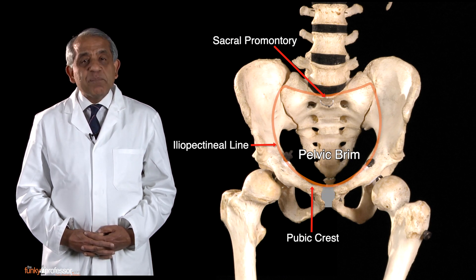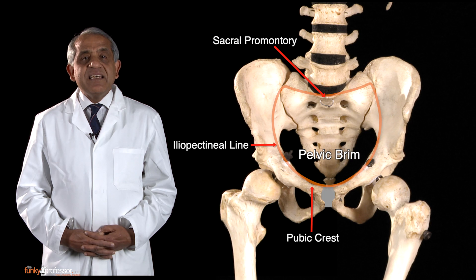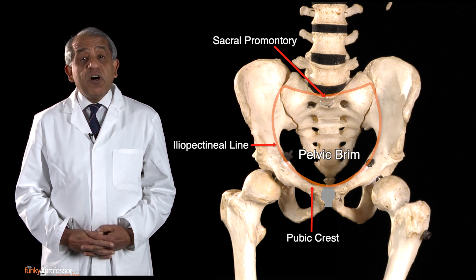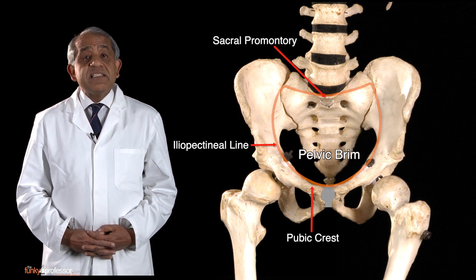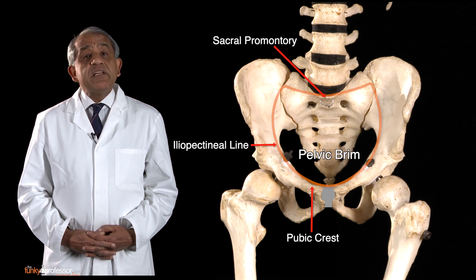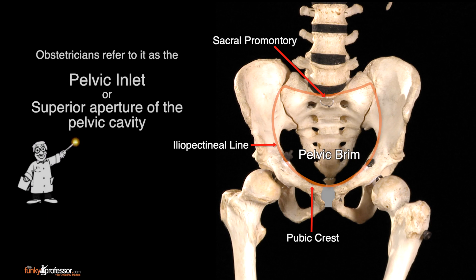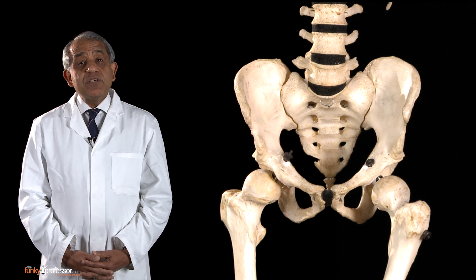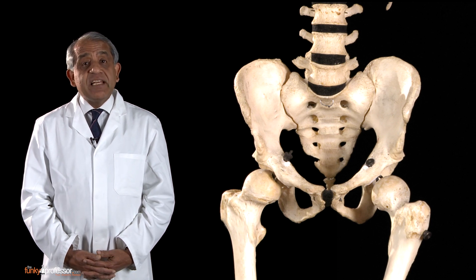In the anatomical position of the bony pelvis, the plane of the pelvic brim is not horizontal but rather directed downwards and forwards. Obstetricians frequently refer to the pelvic brim as the pelvic inlet, or sometimes the superior aperture of the pelvic cavity. The pelvic brim is an important anatomical and surgical landmark.